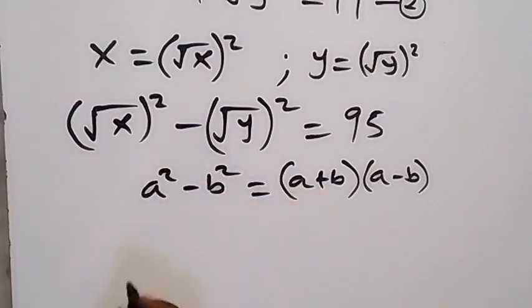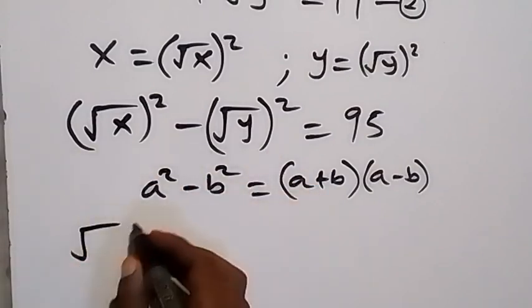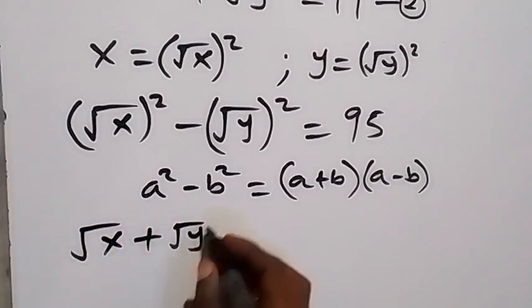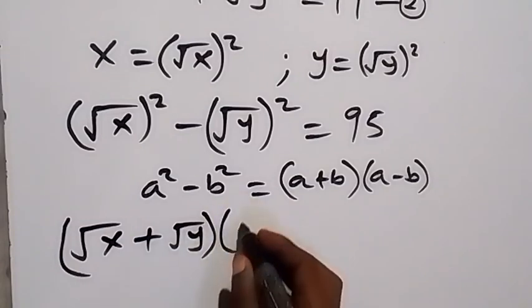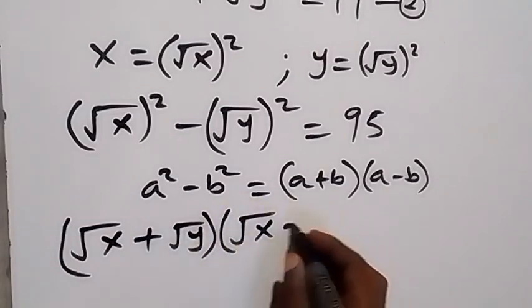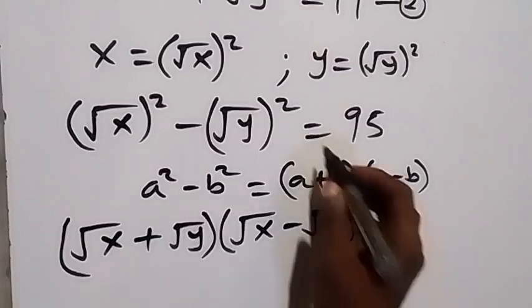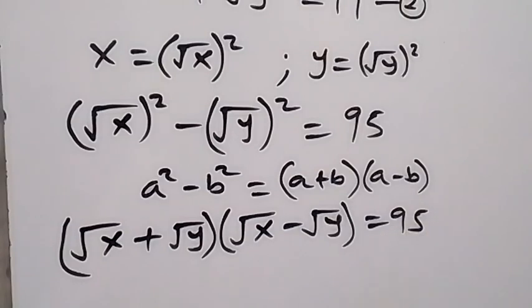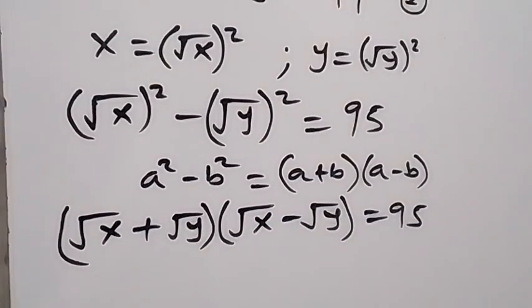The left-hand side can be written as (root x + root y) multiplied by (root x minus root y), which equals 95. From equation two, root x plus root y equals 19.